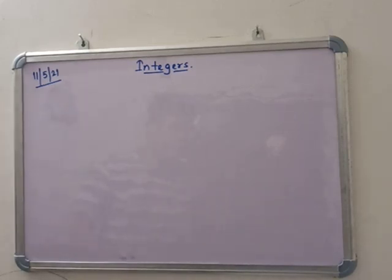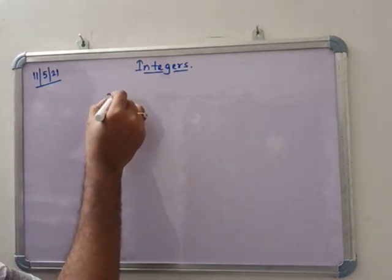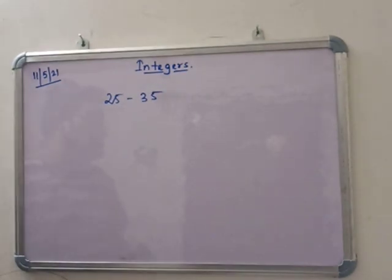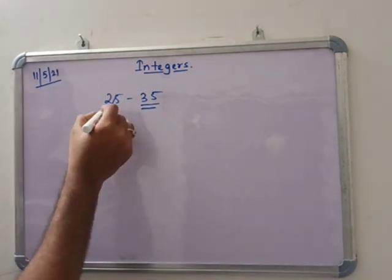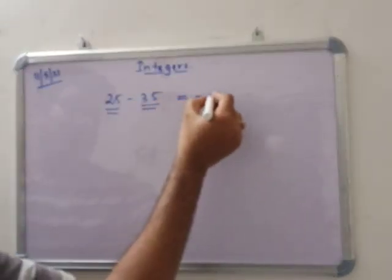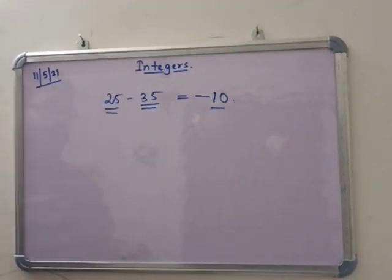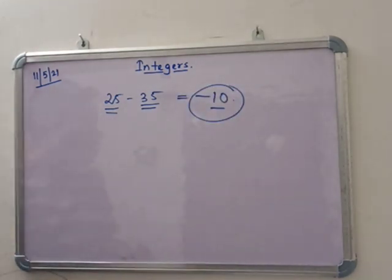Today we are going to discuss about integers. So what are integers? When you subtract, some of the terms come out negative. For example, 25 minus 35 — which is the bigger number here? 35. And 25 is less than 35, so if we subtract these two terms we get minus 10. So here we are seeing that minus 10 is coming. This is the introduction to integers.